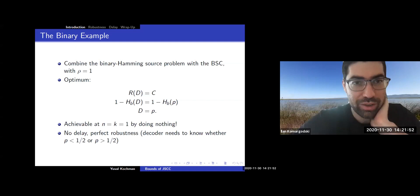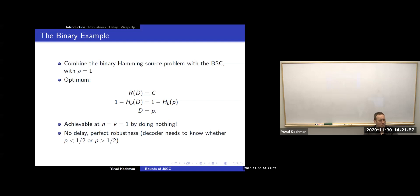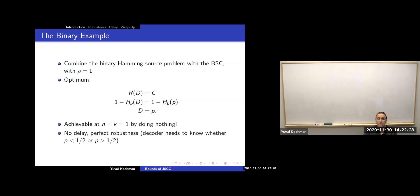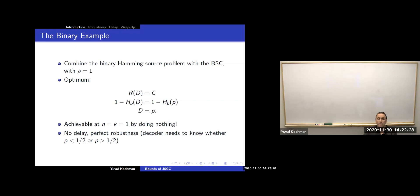Here's an example. Take the binary joint source-channel problem: binary source with Hamming distortion combined with the binary symmetric channel, with ρ=1. The optimum is given by R(D) = C. Solving this with our known formulas, the optimal expected distortion equals exactly P — the probability that the channel flips a bit. But now consider the following very simple scheme.